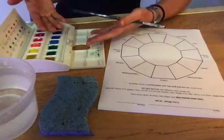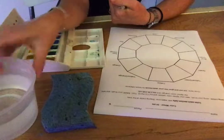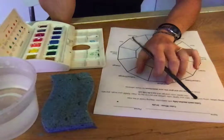So you're gonna have your watercolor palette, a sponge, water container, and also your color wheel handout.